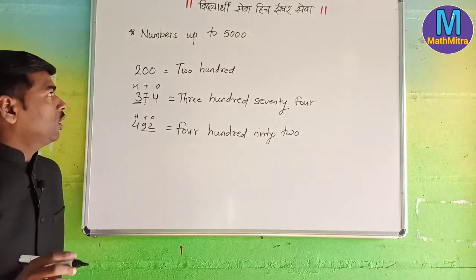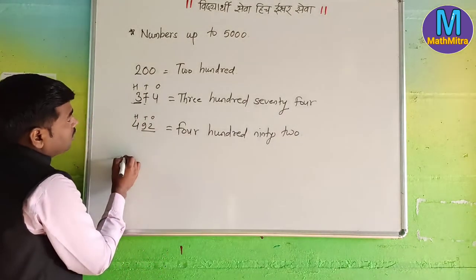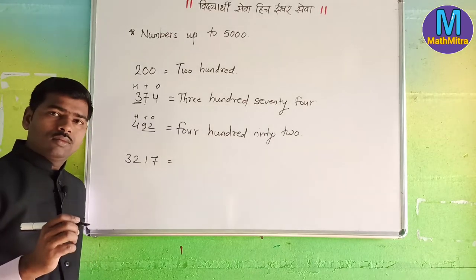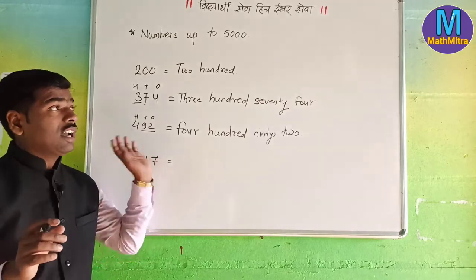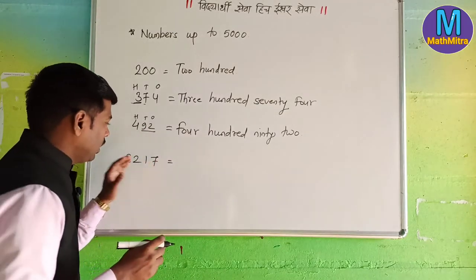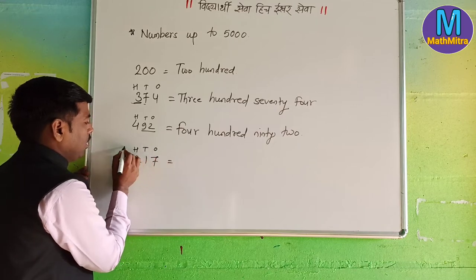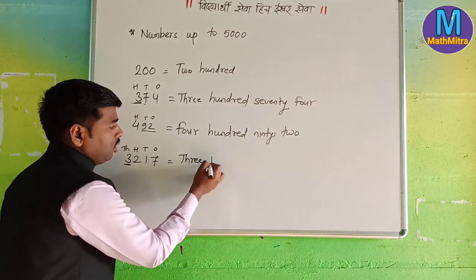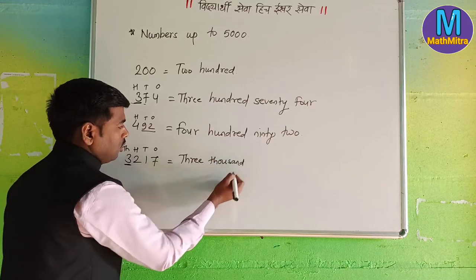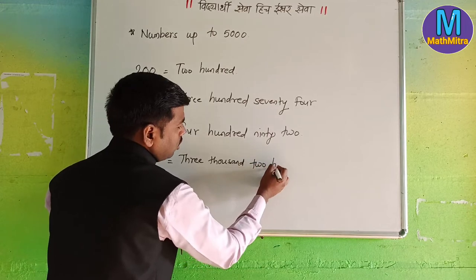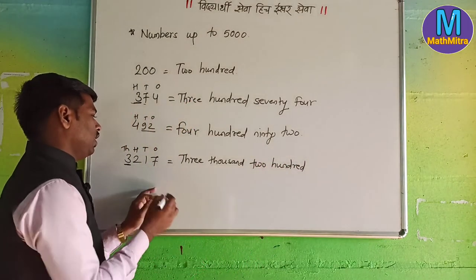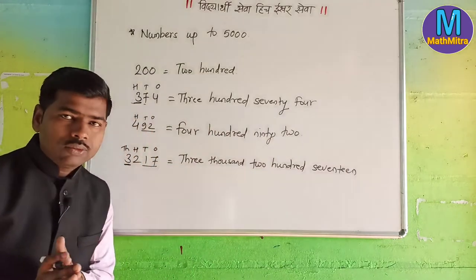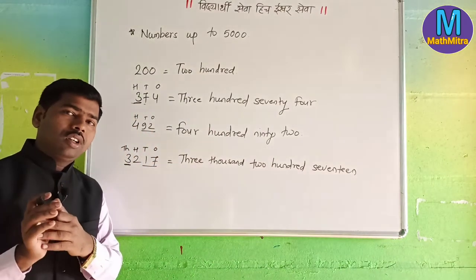Now these three numbers we have seen. Next number is of four digits. Here it is given: 3, 2, 1, 7. How can you read this? If you don't know the places — ones, tens, hundreds, thousands. How many thousands are there? 3. Three thousand. Then tens: two. Hundreds: two hundred. And these both numbers make 17. So it is 3217. Are you getting my point? It's so easy. We can do it.